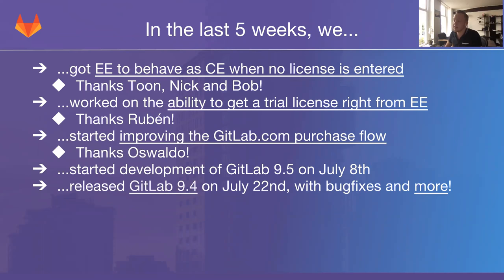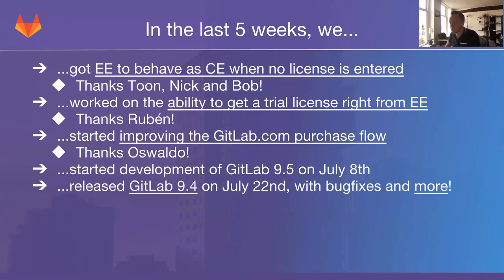Some of these relate to the GitLab release at hand, GitLab 9.4, which we released just a couple of days ago, and a number of them not so much related to the GitLab release itself as the software that supports things like selling licenses to customers. A lot of effort went to getting EE to behave as CE when no license is entered — basically a two- or three-month effort mostly run by Tom, Nick, and Bob, who went through the entire EE codebase and added checks to everything that was EE-only.